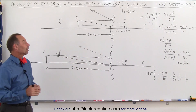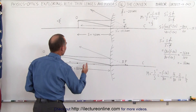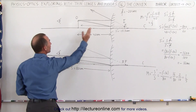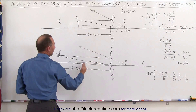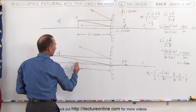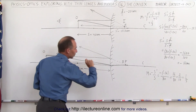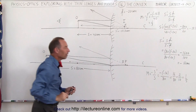That's what happens to the image as we place the object in front of the convex mirror. As you go farther away from the mirror, the image gets closer to the focal point and becomes smaller. That's how we do that.